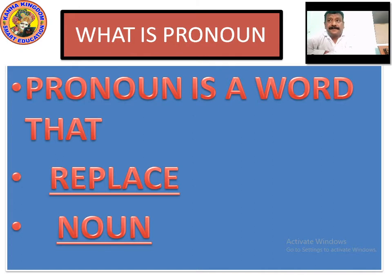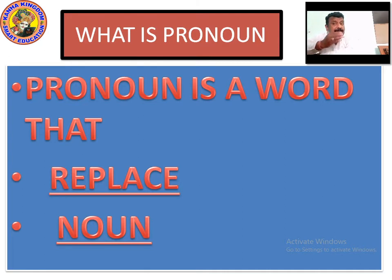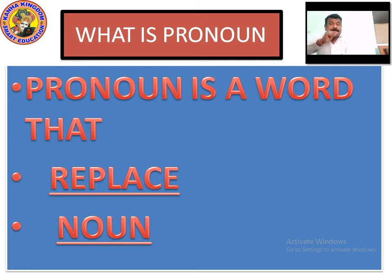So now let's look into what is a pronoun. Pronoun is a word that replaces a noun. What is a noun? Noun is a naming word — the name of people, place, animal, thing, birds, ideas, ideologies. A pronoun is used to replace a noun because the same word or the same name should not be repeated again and again. So we generally replace a noun with a pronoun so that it doesn't get repeated. Please write this down: pronoun is a word that replaces a noun.